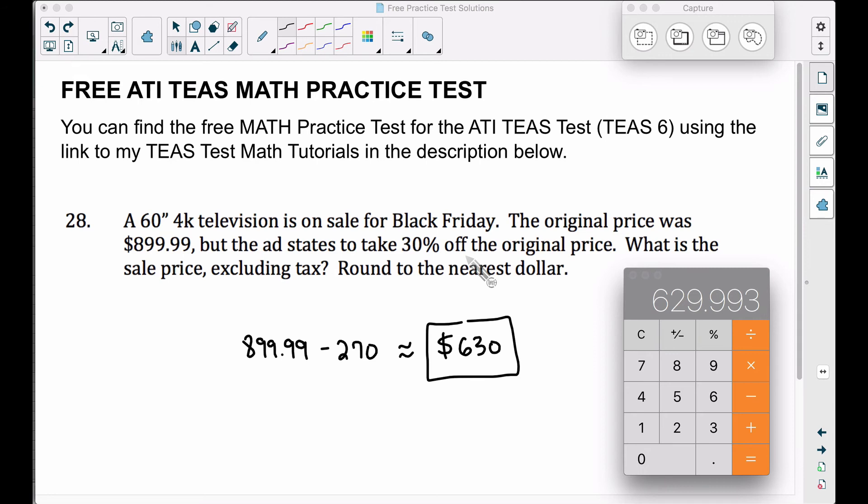Again, to make sure you understand the difference, the first way we did it, we found 30% of this price. Then we subtracted it to get the sale price. Whereas the shortcut I showed you here, if you're getting 30% off, that leaves you paying the remaining 70%. So if you find 70% of this price, that will take you to that same answer.